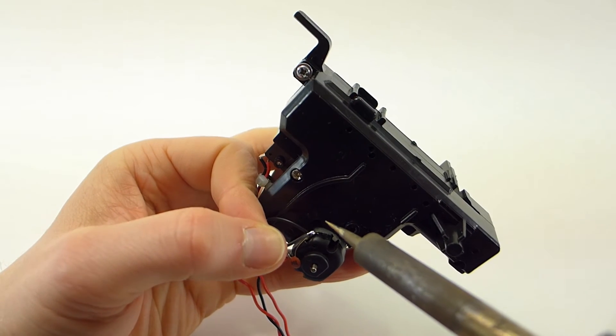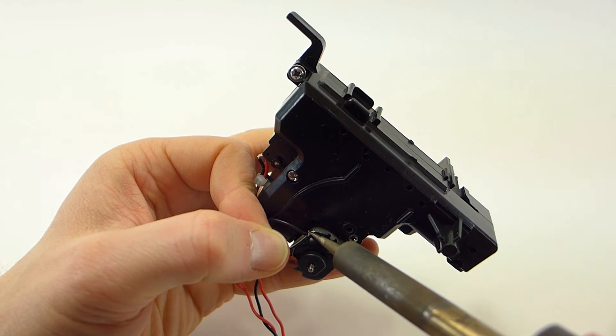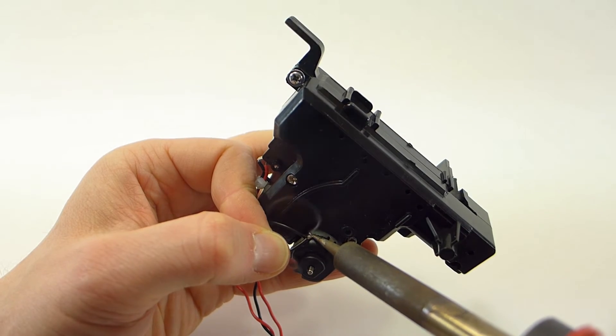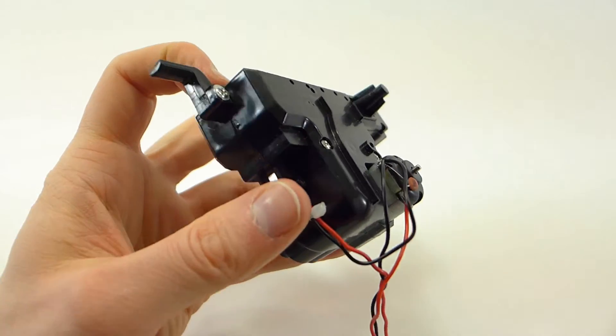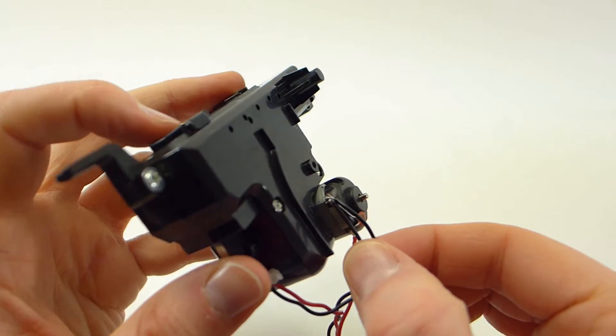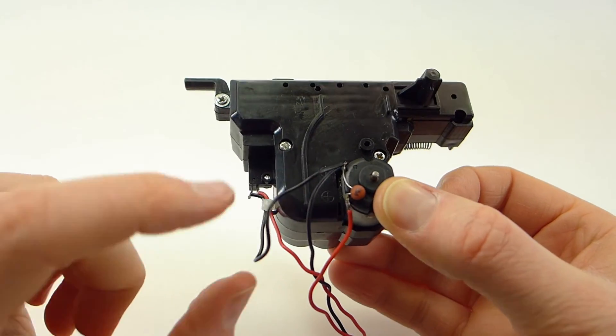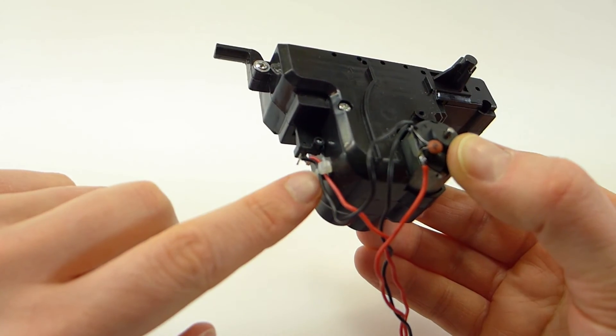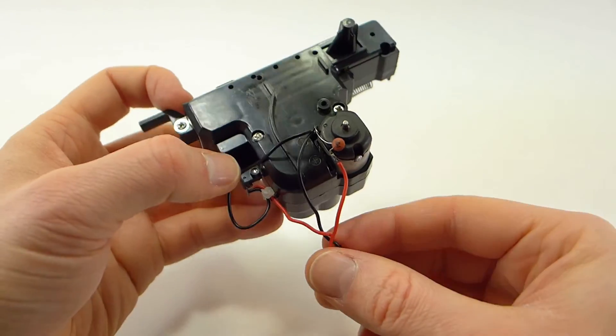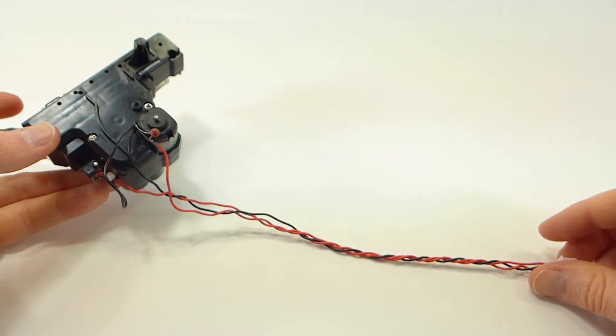And then we're going to solder this black wire to the motor negative terminal, which also has the other black wire already attached to it. So when you're done you should see two wires attached to the motor negative terminal. One of them goes straight to the switch and the other one goes to the three-pin plug.